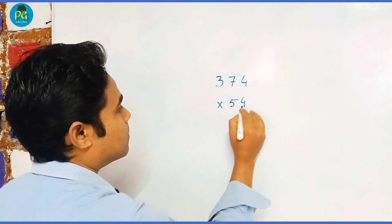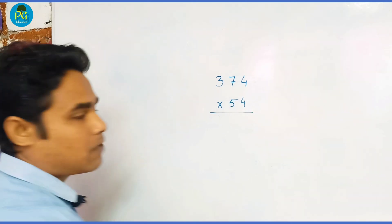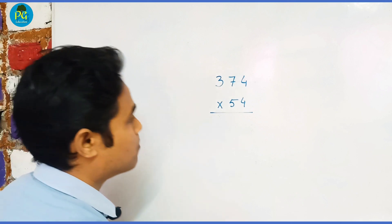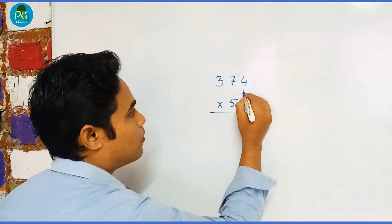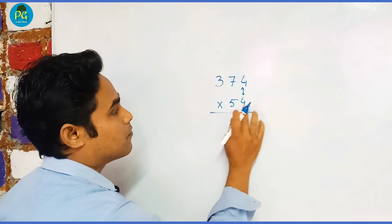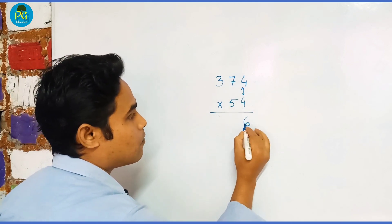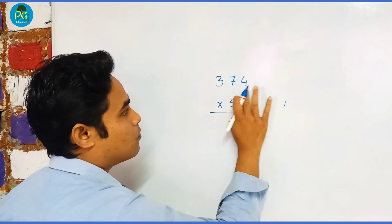Then how can we multiply in a single line? The process is: first we'll multiply 4 and 4. So 4 × 4 = 16, write 6 and carry 1. Now we will multiply